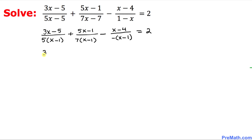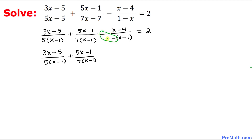In our next step we leave 3x minus 5 divided by x minus 1 as it is, plus 5x minus 1 over 7 times x minus 1 as it is. Here, the two negative signs multiply to give a positive sign, so we can write plus x minus 4 divided by x minus 1 equals 2.